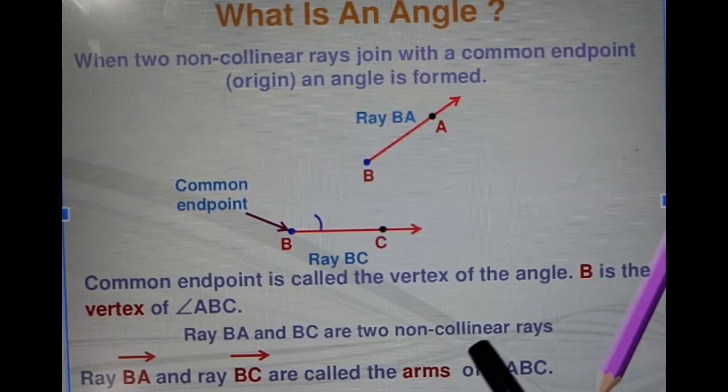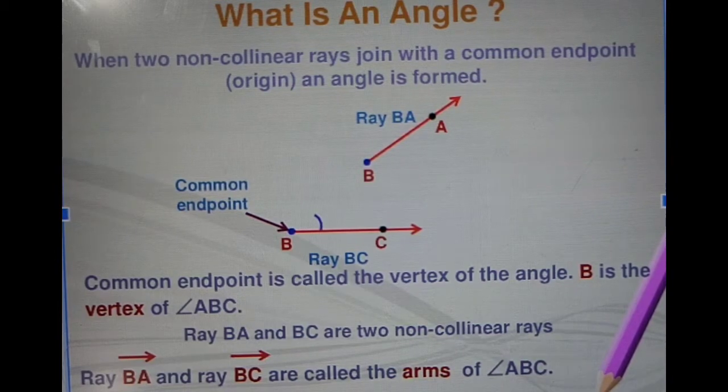Ray BA and ray BC are non-collinear, meaning they are not in one line. Collinear means in the same line.